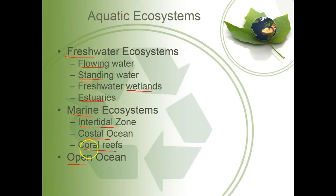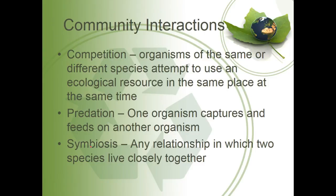The last thing to discuss is community interactions and the idea of symbiosis — often called symbiotic relationships. Competition is the first one. Competition is basically an organism of the same or different species attempting to use an ecological resource in the same place at the same time. For example, two hermit crabs of different sizes competing for the same shell, or a crab and a hermit crab competing for the same food source. Competition happens between organisms of the same species, but it can also happen between organisms of different species, depending on the ecological resource and environment.